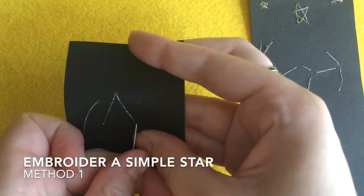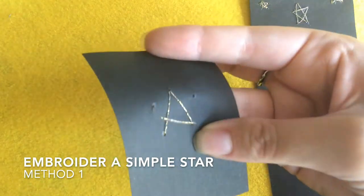As you go, flip back and forth to make sure you don't get tangled. The back will look messy, but don't worry about it.